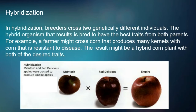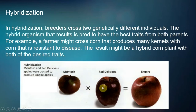In this picture, you have an example of the Macintosh and Red Delicious apples. A Macintosh and a Red Delicious apple were combined by hybridization and they formed the Empire apple.